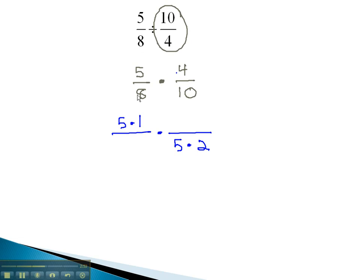Similarly, 8 and 4 have a common factor of 4. This is because 8 is 4 times 2, and 4 is 4 times 1.